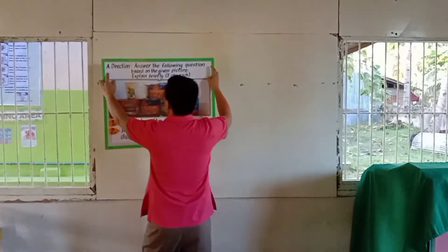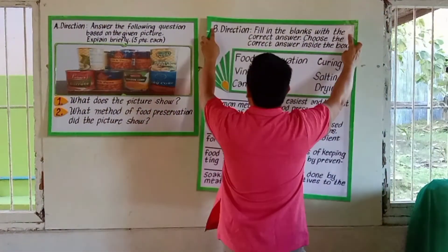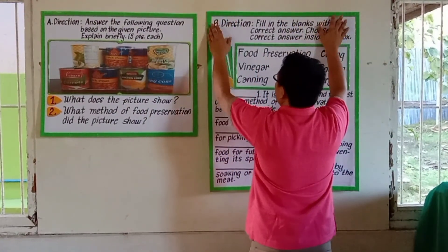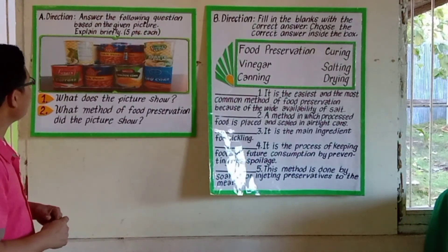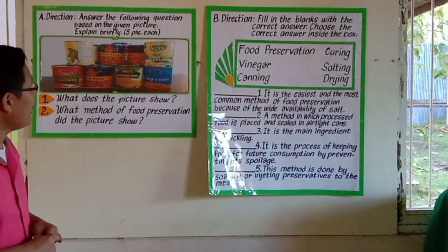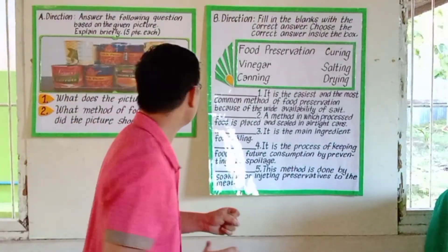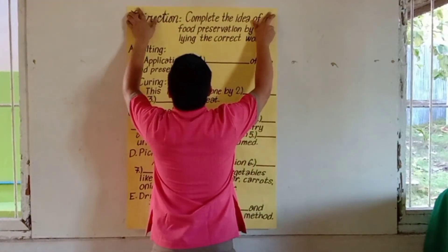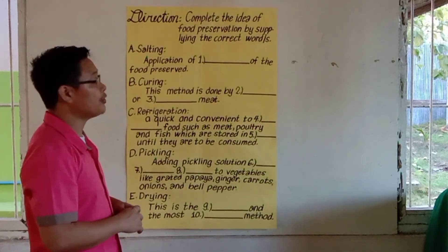For evaluative learning, I will have an assessment for students. This is an individual activity. For Part A, the direction is: answer the following questions based on the given feature and explain it briefly for five points. For Part B, fill in the blanks with the correct answer — choose the correct answer from inside the box. The fourth part is additional activities for application and remediation: complete the idea of food preservation by supplying the correct word or words.